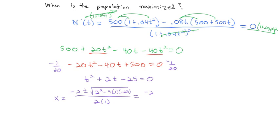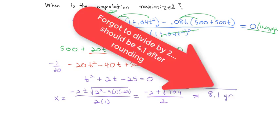And so cleaning that up, we get negative 2 plus or minus the square root of 104 all over 2. And technically we have two answers here, one from the plus, one from the minus. But if I do the minus, negative 2 minus something is going to give me a negative. And we're not talking about a negative amount of time for this deer population. So we can just say negative 2 plus the square root of 104 over 2. And if I put that in my calculator, that's going to come out to 8.1 years. At 8.1 years, the number of deer seems to be maximized.